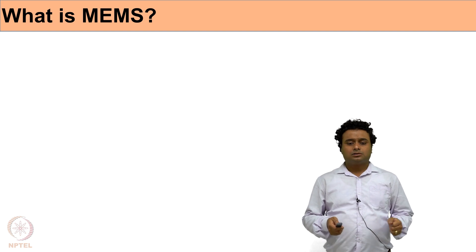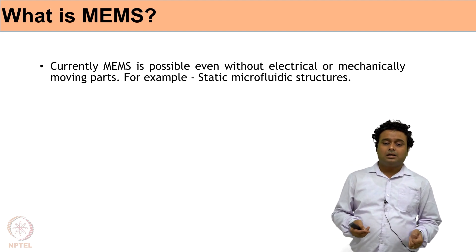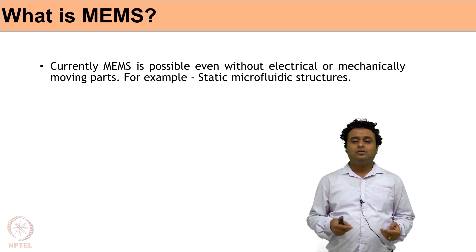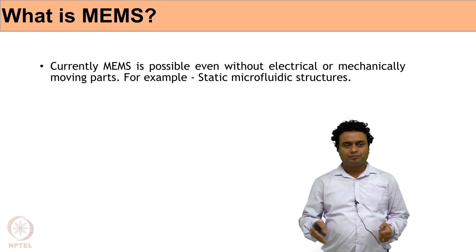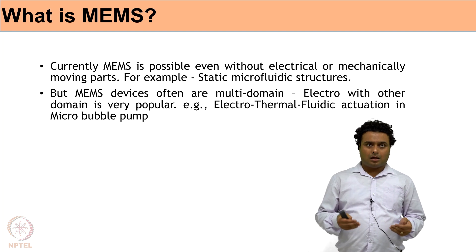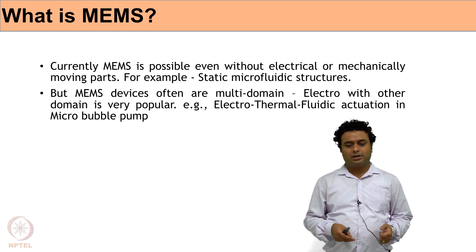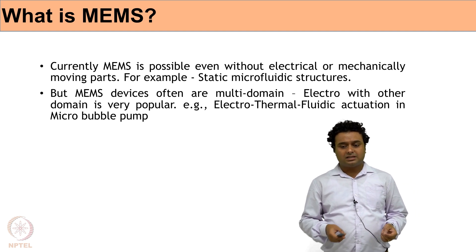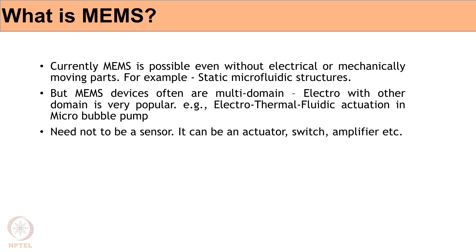Now we know the different nomenclature of MEMS. Currently MEMS devices are possible even without electrical or mechanically moving parts - for example, static microfluidic structures. Along with the electric and mechanical part, thermal, fluidic, and other domains are also very much important in this course. You will see many examples of electro thermal and fluidic actuations or micro bubble pumps. Another important point is that MEMS need not be a sensor - it can be an actuator also, like a switch or amplifier.